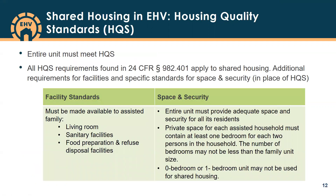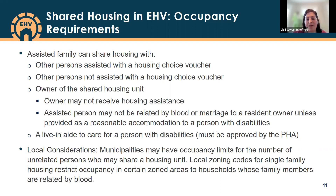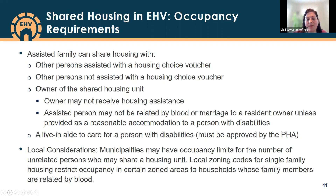A quick clarification on what 'housing assistance' means when it says the owner may not receive housing assistance: the owner can't have an EHV or housing choice voucher themselves. The owner will receive a housing assistance payment (HAP) on behalf of the assisted family, but they are not going to be benefiting otherwise from the EHV program — they will just be getting payment as part of the HAP, not subsidized themselves.